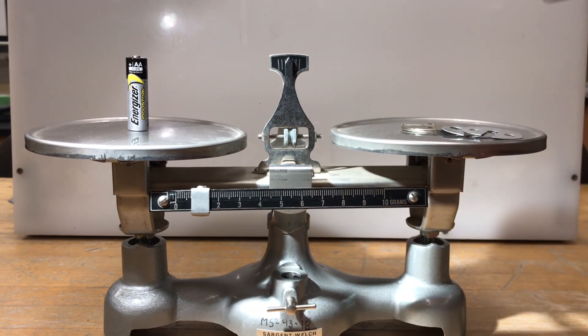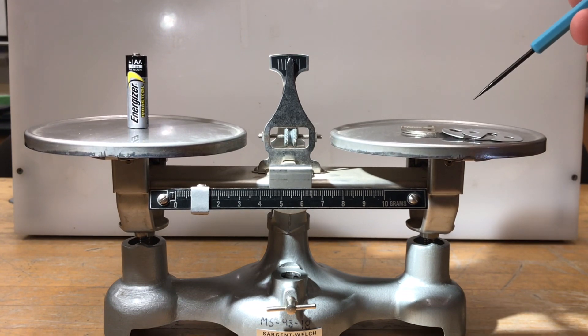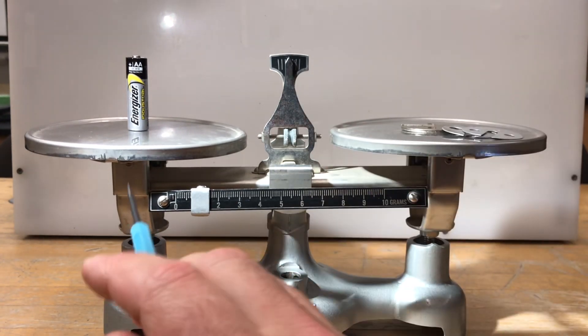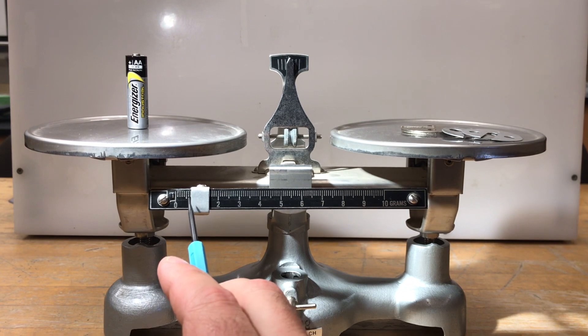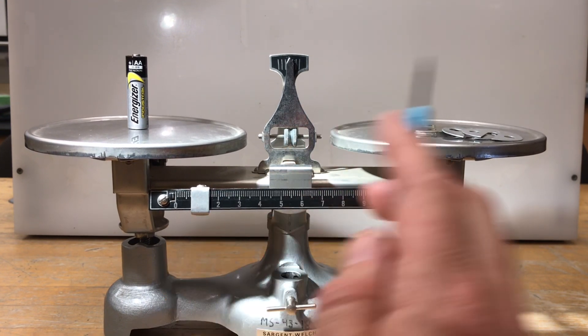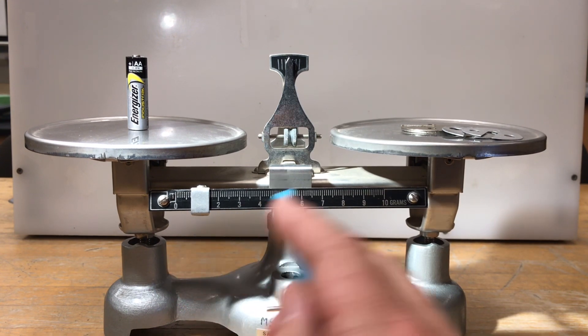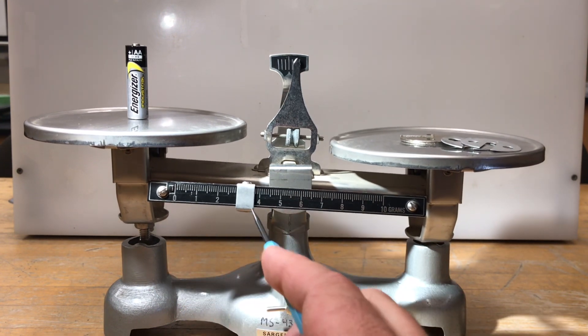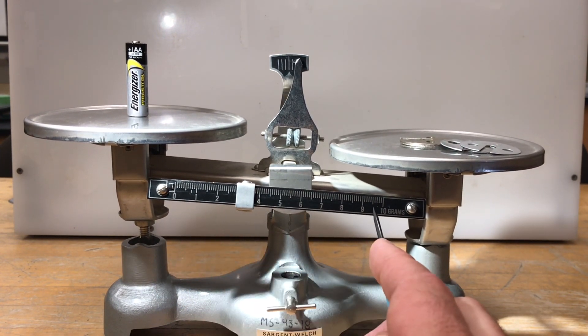Now I've got 23 grams on the balance pan over here, and I can just see the seven here. So that would be 23.7. Like I said, you can slide this and add anywhere from zero to about 10 grams.